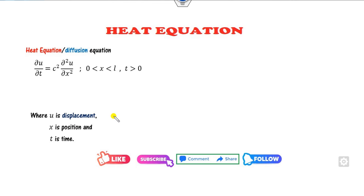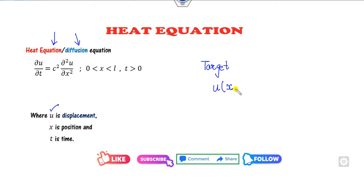The heat equation is also called the diffusion equation. In this heat equation, u is called the displacement, x is my position, and t is my time. Your target is to find the displacement at position x and at time t. To achieve this target, we need some initial conditions.